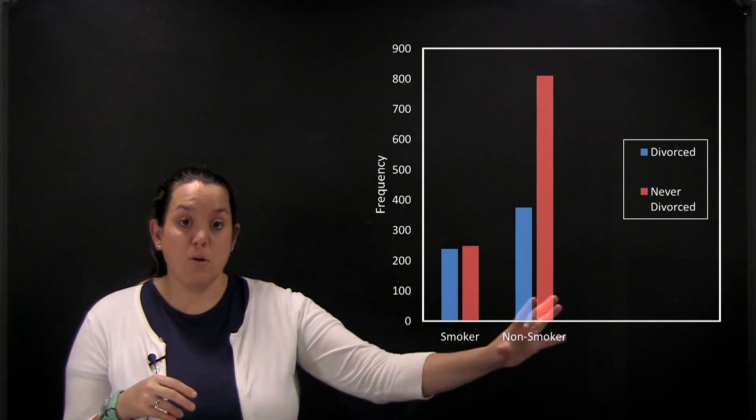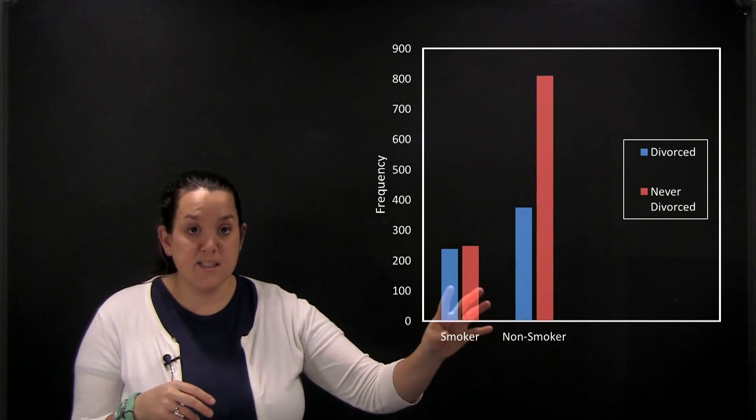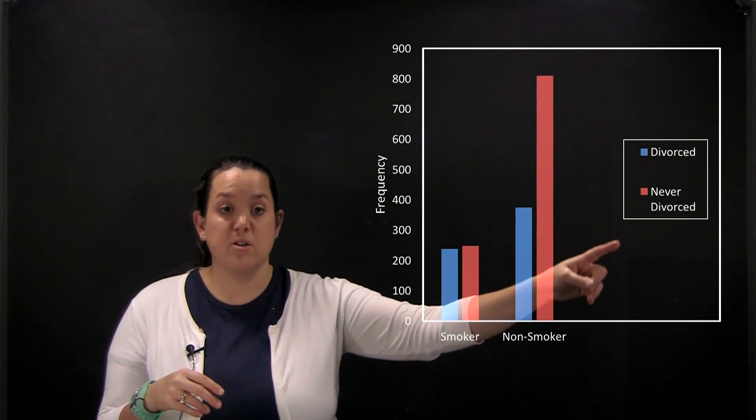To illustrate that, you'll have a variable that's represented on the x-axis and then different colors or patterns for the second variable.